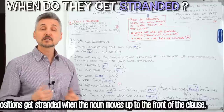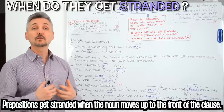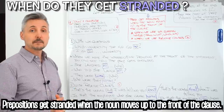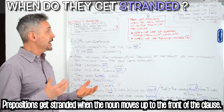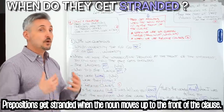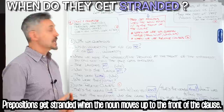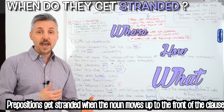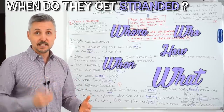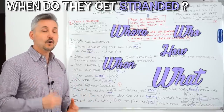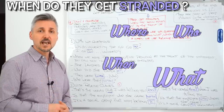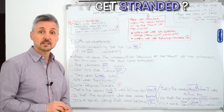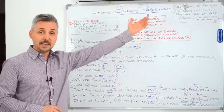Prepositions get stranded when the noun moves up to the front of the clause. For example, when we use WH question words, like how, what, where, when, who, etc. Or when we use relative clauses. And if you want to watch a lesson on relative clauses, you may click here.